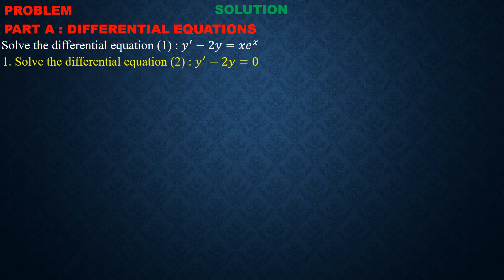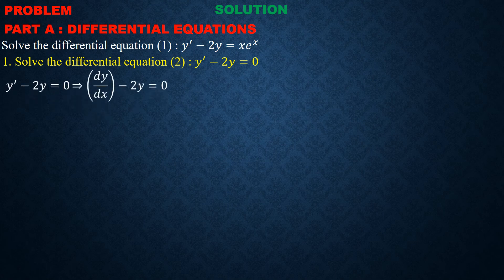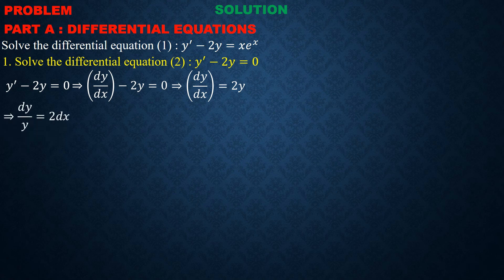The first part asks us to solve the differential equation 2, which is y prime minus 2y equals 0. Since y is a function of x, this means dy/dx minus 2y equals 0, so dy/dx equals 2y. This identifies a first-order differential equation where we can separate the variables and integrate both sides to express y as a function of x.